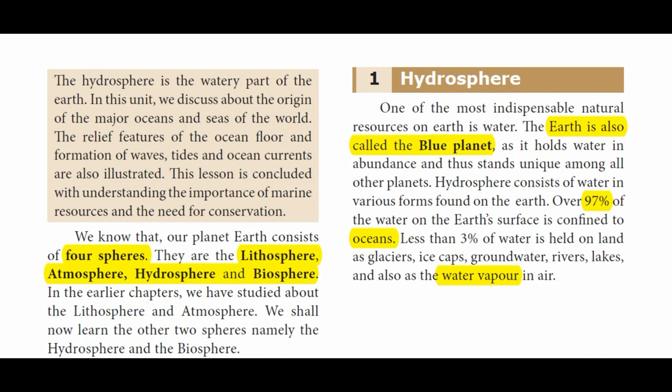The Earth is also called the Blue Planet. We can say something about the Blue Planet. 97% of the water on the Earth's surface is ocean water.